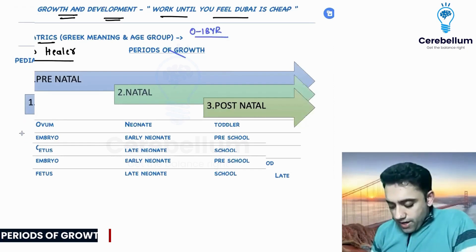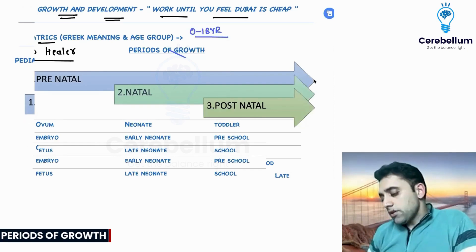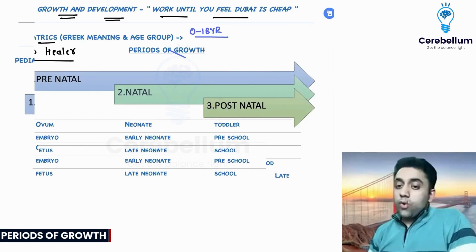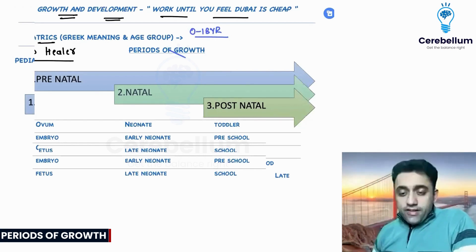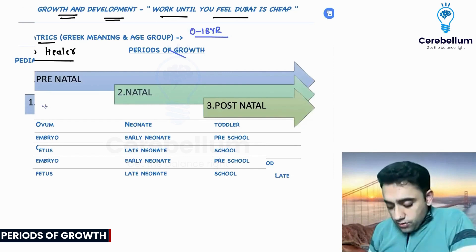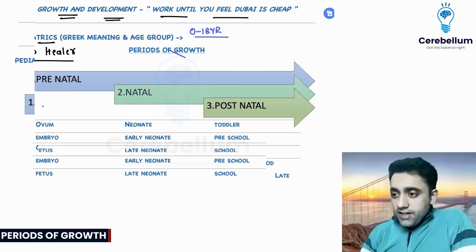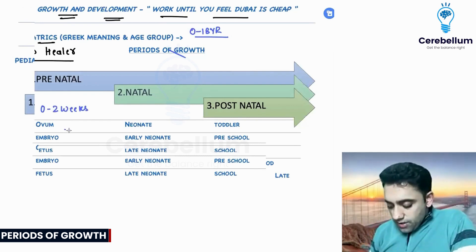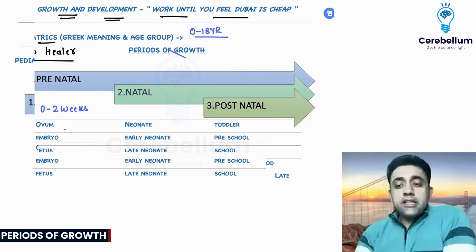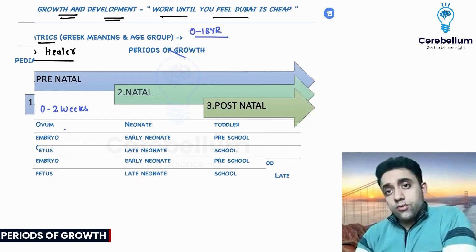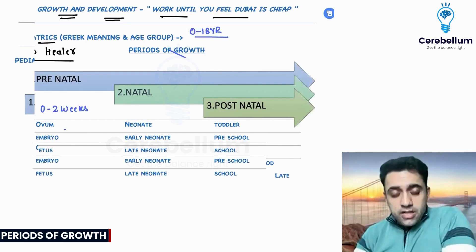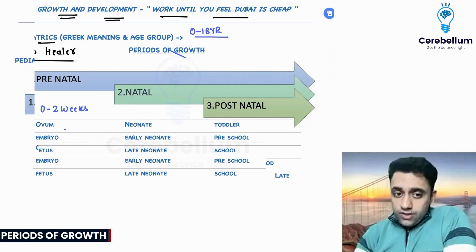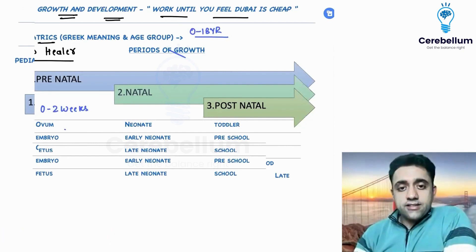What is ovum, what is embryo, and what is fetus? Very important question. When the mother is pregnant, zero to two weeks of gestation is known as ovum. Three to eight weeks is known as embryo. And nine weeks till birth is known as fetus.